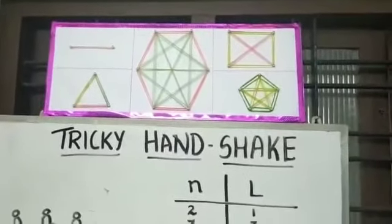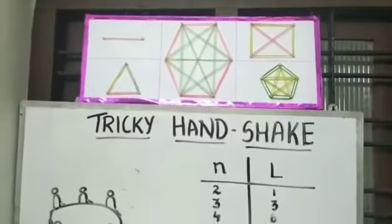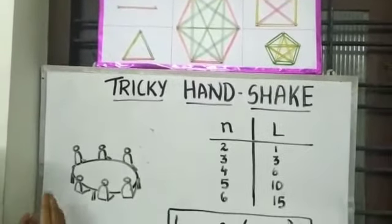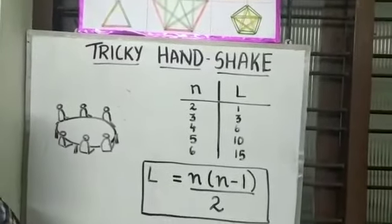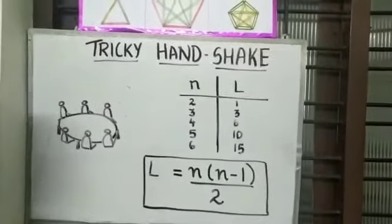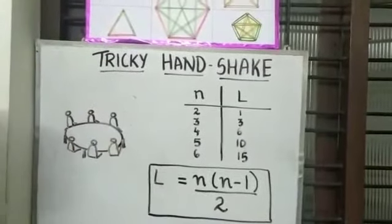Before going to the model, we can see a situation here. If n number of people are sitting around a round table and they are asked to give shake hands, then how many shake hands would be there in between them?